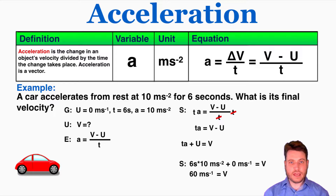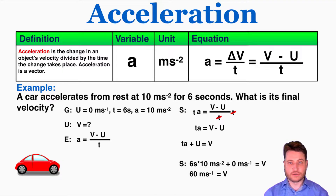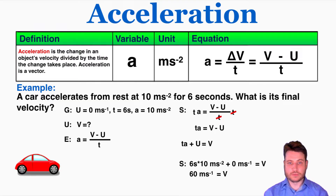This makes sense because if the acceleration is 10 meters per second squared, that's the same as 10 meters per second per second — so every second that passes, the velocity increases by 10 meters per second. Starting from 0, after 1 second it's at 10 m/s, after 2 seconds it's at 20, after 3 it's at 30 meters per second, and so on until 6 seconds have passed and it's going 60 meters per second.